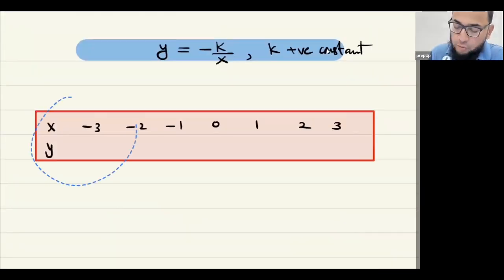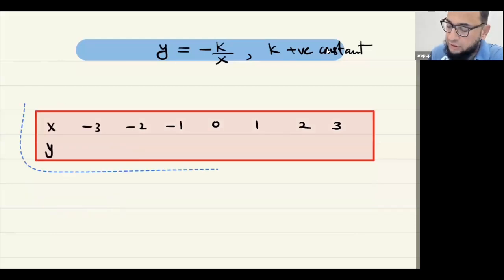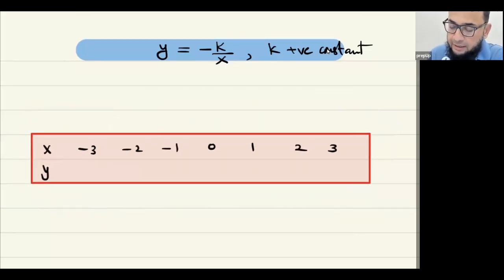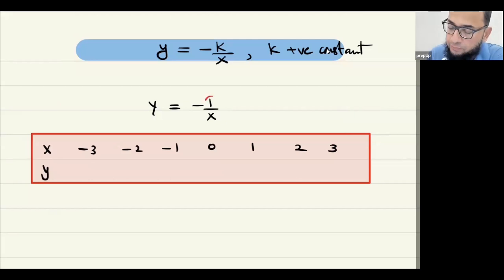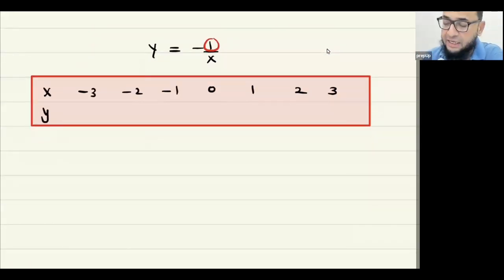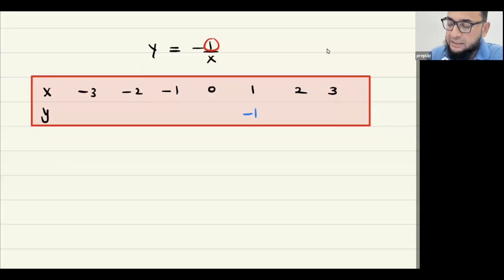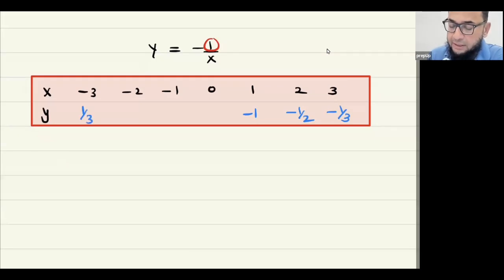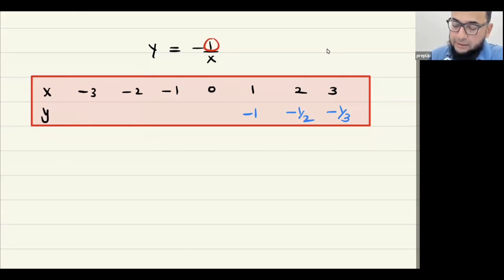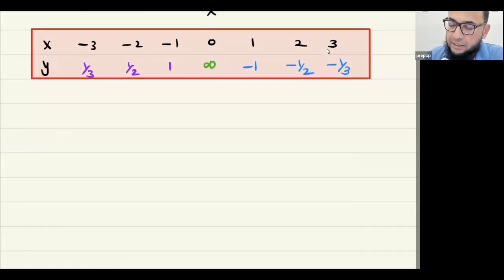For y equals negative one over x: with a negative sign, one over one becomes minus one, one over two becomes minus one-half, one over three becomes minus one-third. For the negative x values, after applying the negative sign they become positive: one-third, one-half, and one. The reciprocal of zero remains undefined.